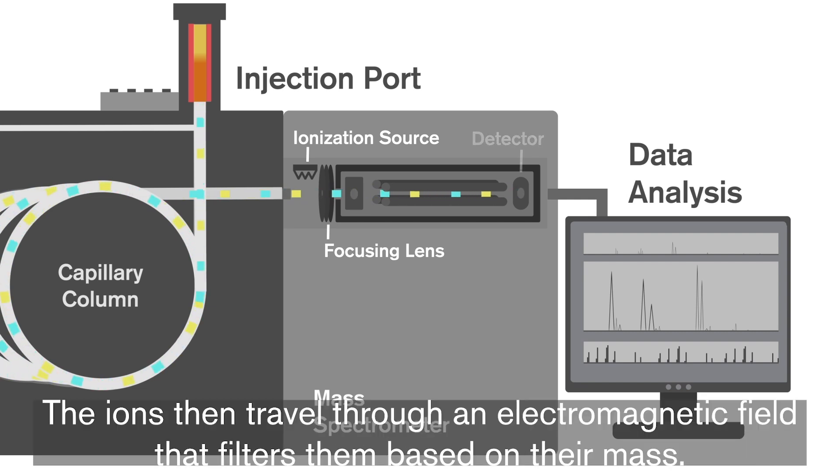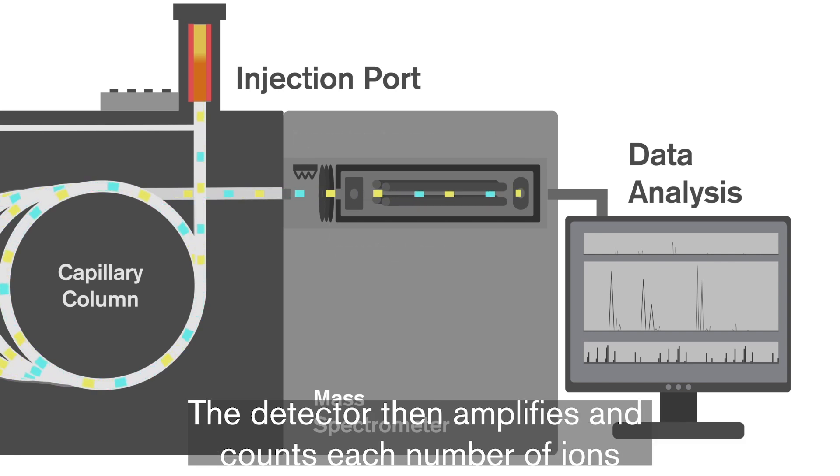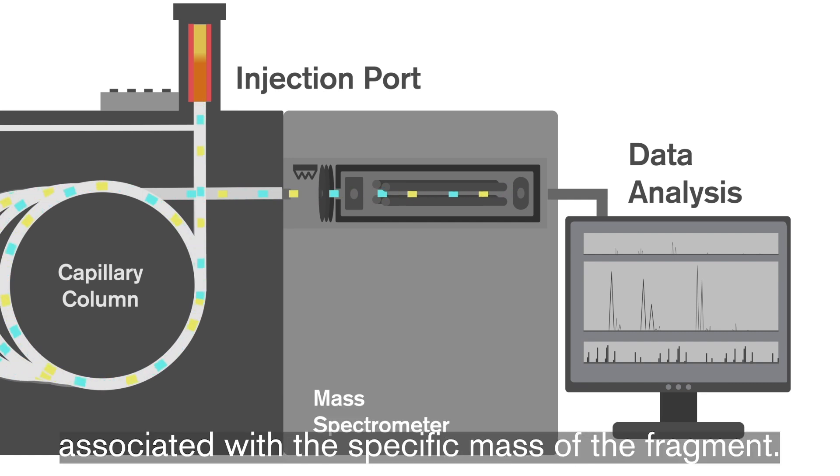The ions then travel through an electromagnetic field that filters them based on their mass. The detector then amplifies and counts each number of ions associated with the specific mass of the fragment.